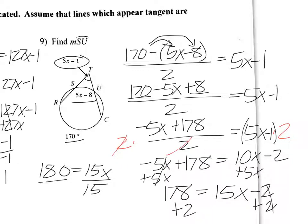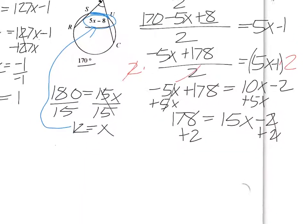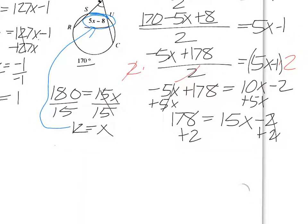Okay. Now let's go back. Find arc SU. Where is arc SU? That is right here, which is that expression. So I need to take 12 and plug it back in here. So I'm going to scroll up here. That's going to be 5 times 12 minus 8. So that's 60 minus 8, which is, I think that's 52. Yes. 52 degrees.